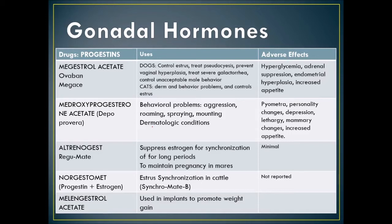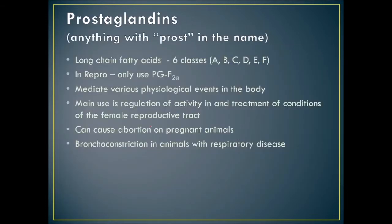Prostaglandins: any drug ending in 'prost' in the name is a prostaglandin. These are long-chain fatty acids with six classes — A, B, C, D, E, and F. In reproduction we only use PGF2 alpha, which mediates various physiologic events. The main use is regulation and treatment of conditions of the female reproductive tract. It can cause abortion in pregnant animals and bronchoconstriction in animals or people with respiratory disease.